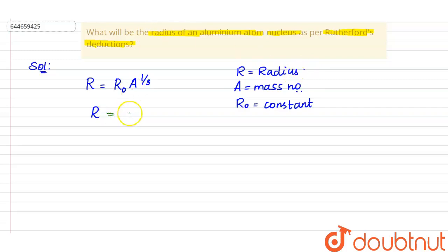Radius of aluminium atom will be equivalent to the constant value R₀, which is 1.3 × 10⁻¹³ centimeter, into the mass number of aluminium. Mass number of aluminium is equivalent to 27, so it's 27 to the power 1/3.